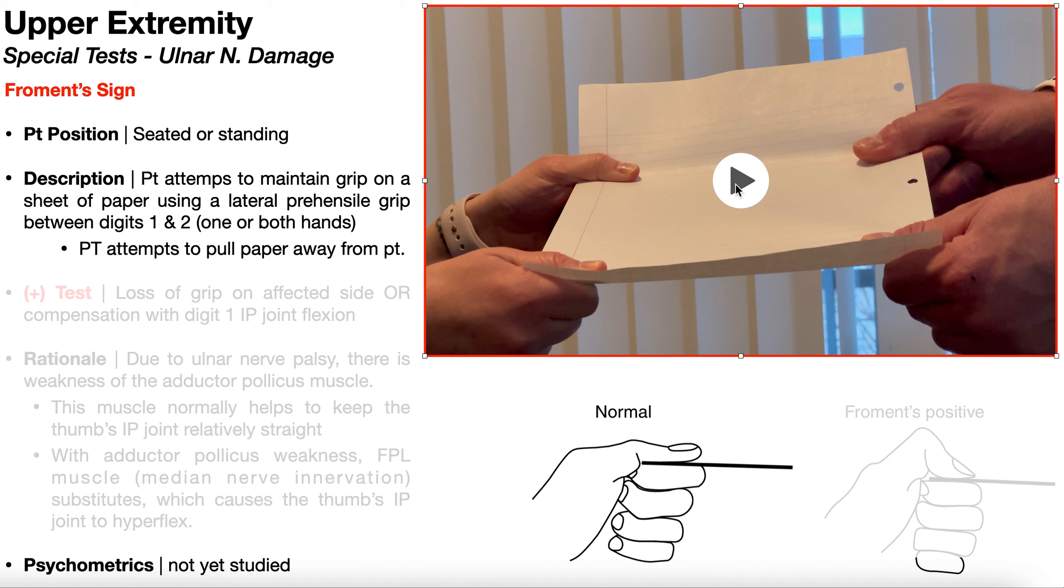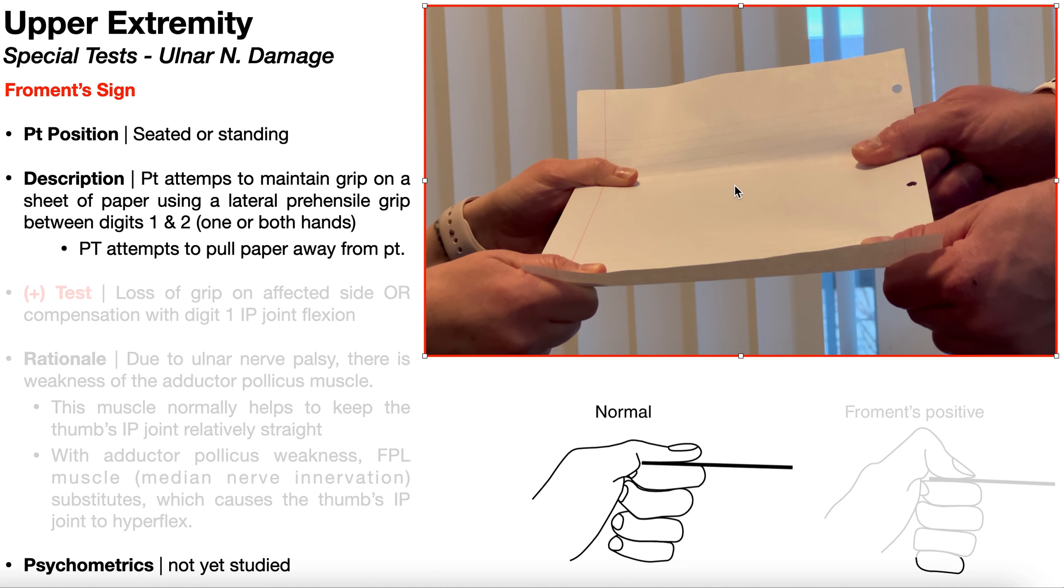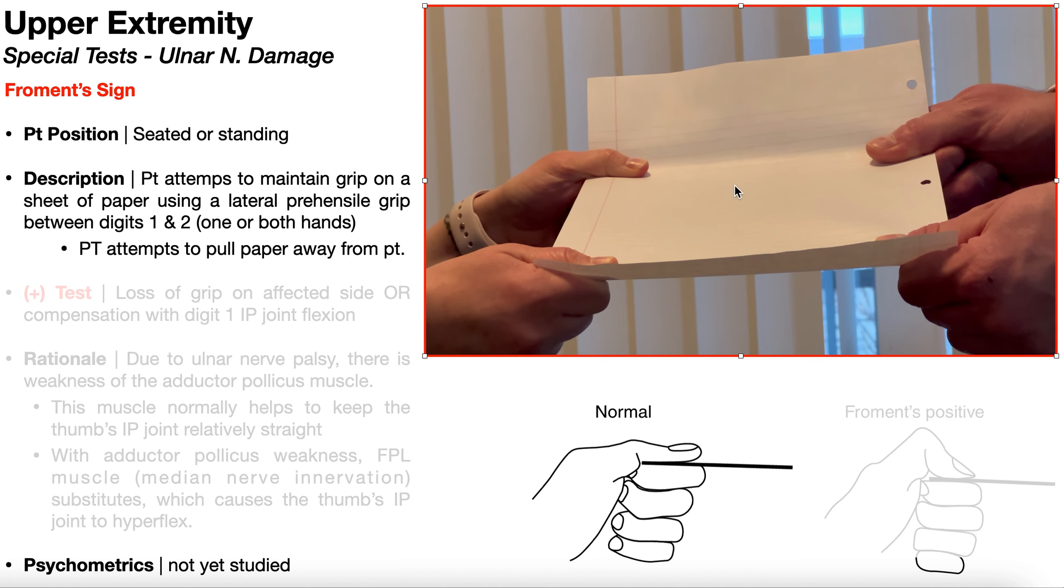Now, this is what happens normally, or this is a negative test, and what you see right here is that, number one, the patient is maintaining grip on the paper. The paper is not being pulled away from them, but also nothing is changing about that lateral prehensile grip. In other words, if you look at the interphalangeal joint of the thumb, it maintains roughly the same angle. It's almost completely at neutral. If it has a slight amount of flexion like this, that's okay. That may just be the normal position of the patient's thumb. But in just a minute, you'll see what a positive test looks like.